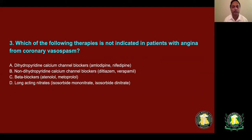Which of the following therapies is not used in patients with coronary vasospasm — that is, Prinzmetal angina? Options: A — calcium channel blockers such as amlodipine or nifedipine; B — diltiazem and verapamil; C — beta blockers; D — long-acting nitrates. The answer is C — beta blockers. We do not give beta blockers in patients with coronary vasospasm, especially non-selective beta blockers, as they are not indicated in those patients.